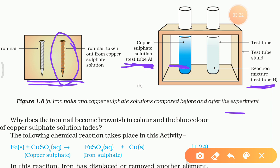Copper is less reactive than iron, or we can say iron is more reactive than copper. So if we dip the iron into the copper sulphate solution, iron will displace the copper from its salt and form iron sulphate, which is light green in color, and copper will be displaced by iron. This is the displacement reaction.